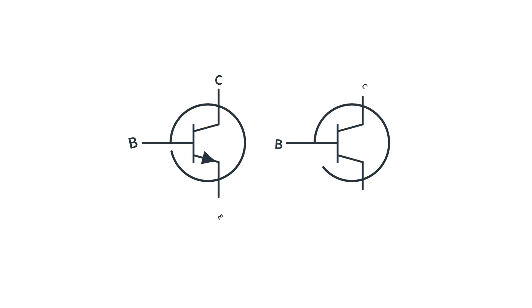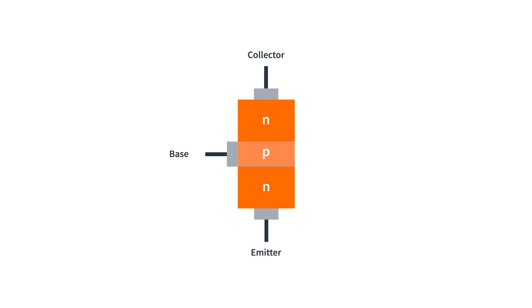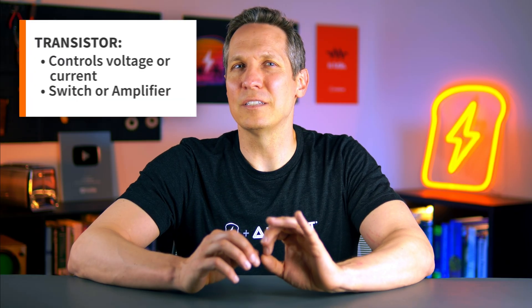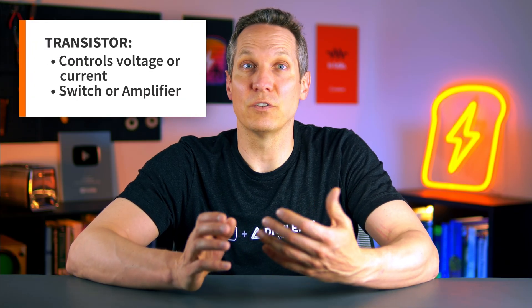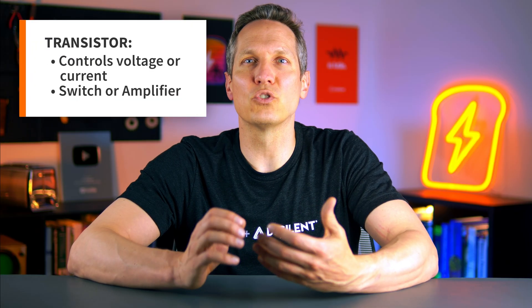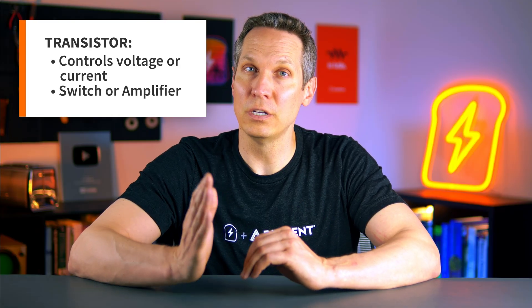Jumping into it, BJTs can seem intimidating at first, but in this video we'll focus on the core ideas — enough to build your intuition for how they behave in DC circuits. To start with, we need to identify what a transistor is. To keep things simple, a transistor is a device that regulates or controls current flow or voltage. It can either act as a switch or an amplifier.